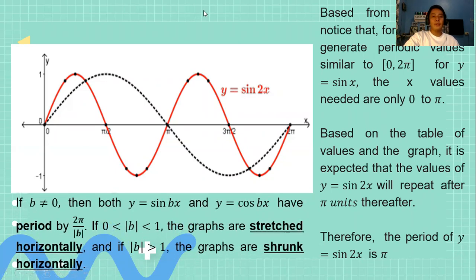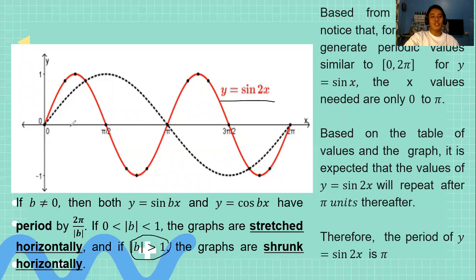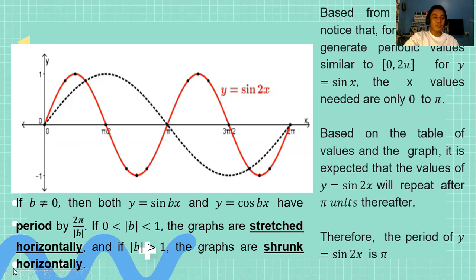Here is the rule: if b ≠ 0, then both y = sin(bx) and y = cos(bx) have a period given by the formula 2π / |b|. If b is between zero and one, the graph stretches horizontally. If b is greater than one, the graph shrinks horizontally. Notice that for y = sin(2x), b = 2 is greater than one, so the graph (the red part) shrinks horizontally. Remember the formula: 2π over the absolute value of b.